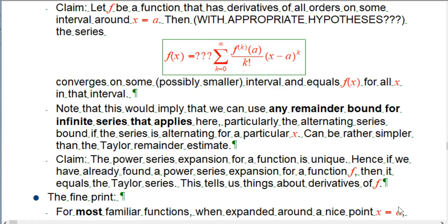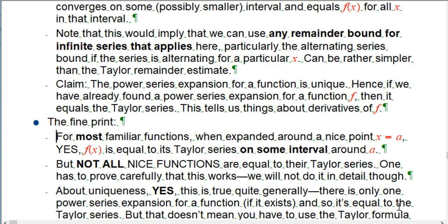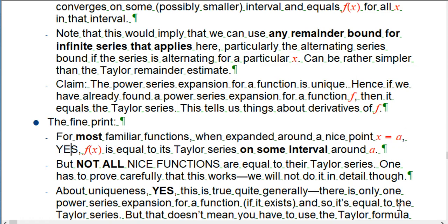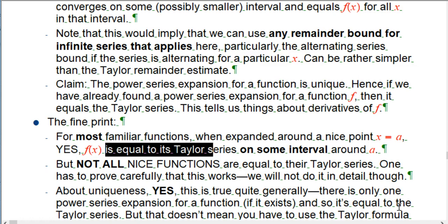So, the fine print, and I think I'm going to tell you a little bit about the fine print. Not absolutely all the details, that's what books are for. So, yes, for most familiar functions, when you expand around some nice point on the function. So, for example, don't try to take log expanded around zero, or square root of x expanded around zero, or a negative or something like that. That's not a good idea. Mostly, yes, the Taylor series will converge on some interval around a, might be smaller than you would want it to be. Just like the geometric series doesn't converge everywhere. And the function value will be equal to the Taylor series. Mostly.